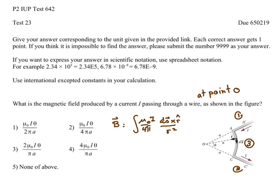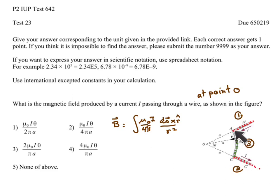We can calculate this by dividing the wire into three parts. Part one is a straight wire segment here, part two is a straight wire segment here, and part three is a curved segment which is part of a circle. We can do this because on parts one and two, the wire lies along the radial direction from point O.